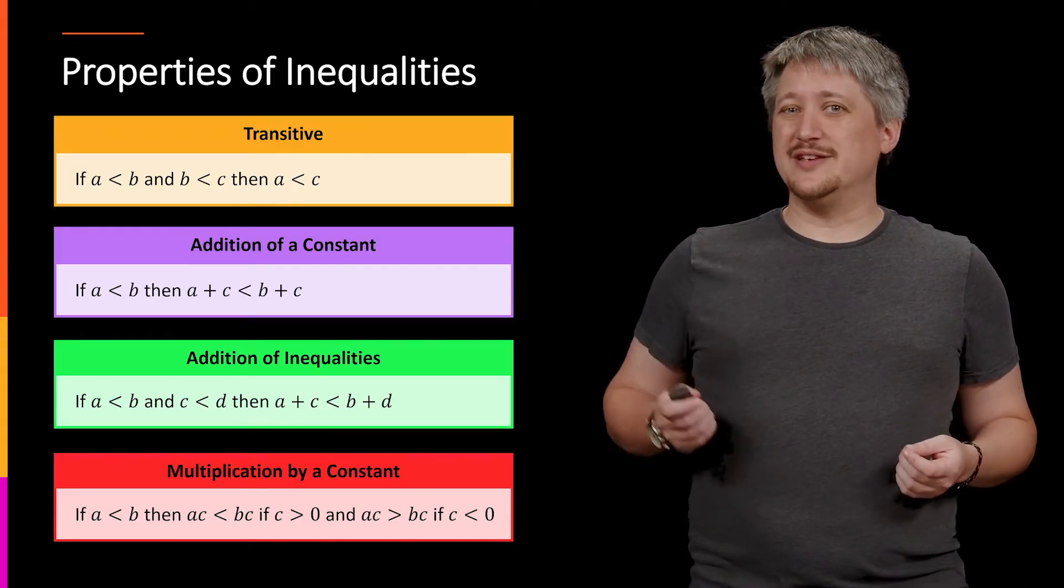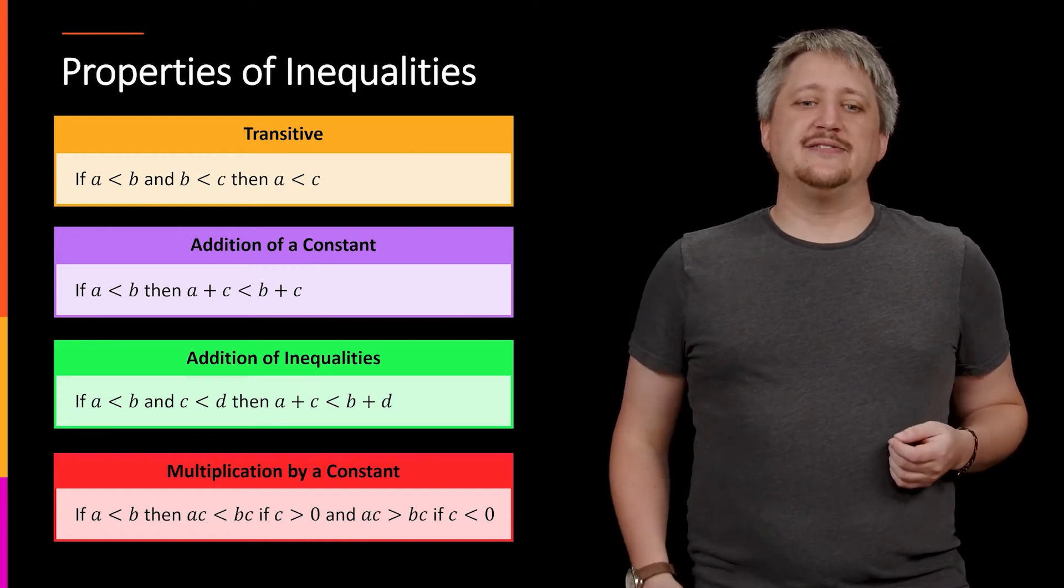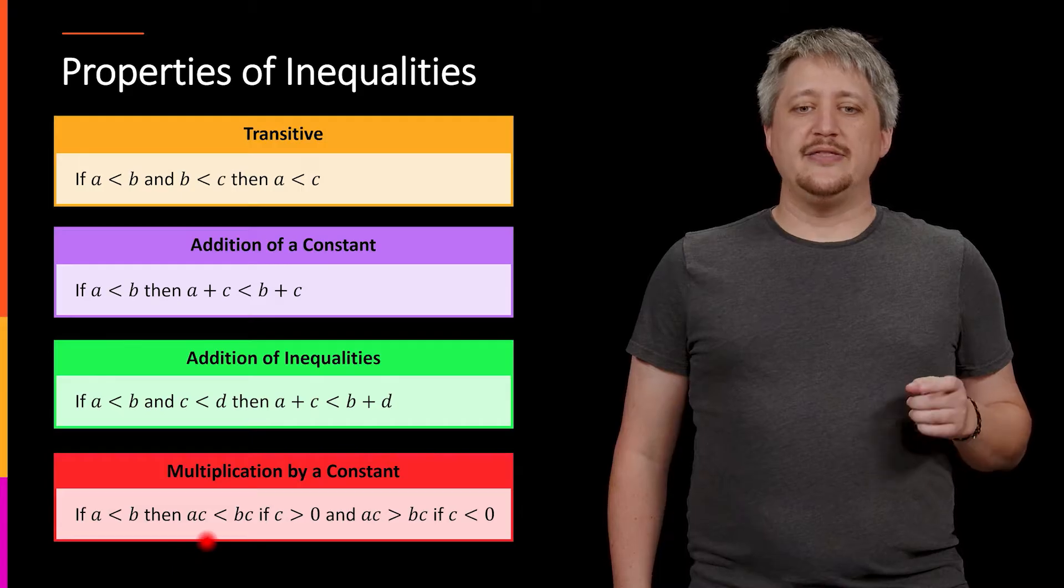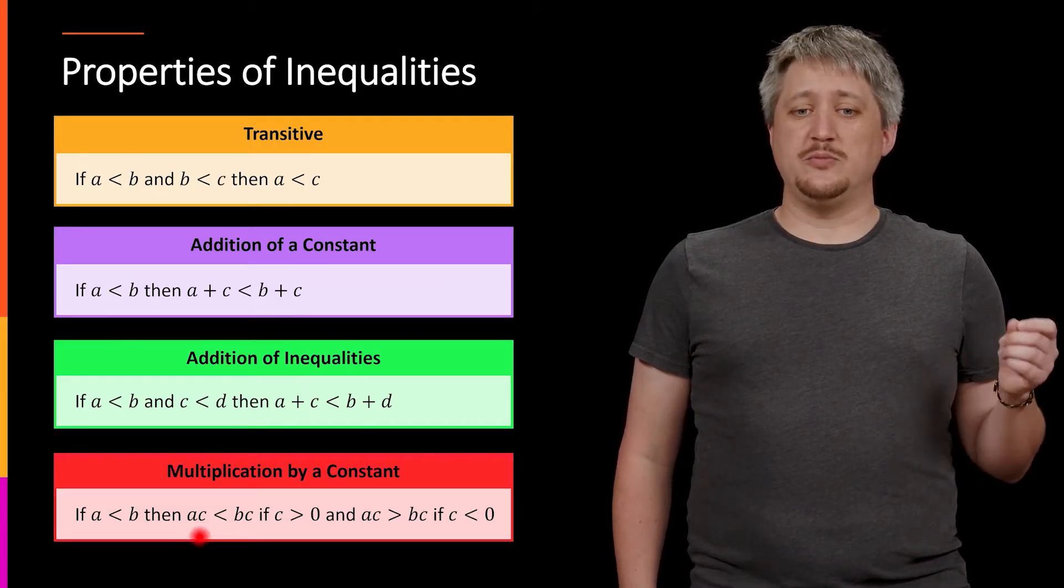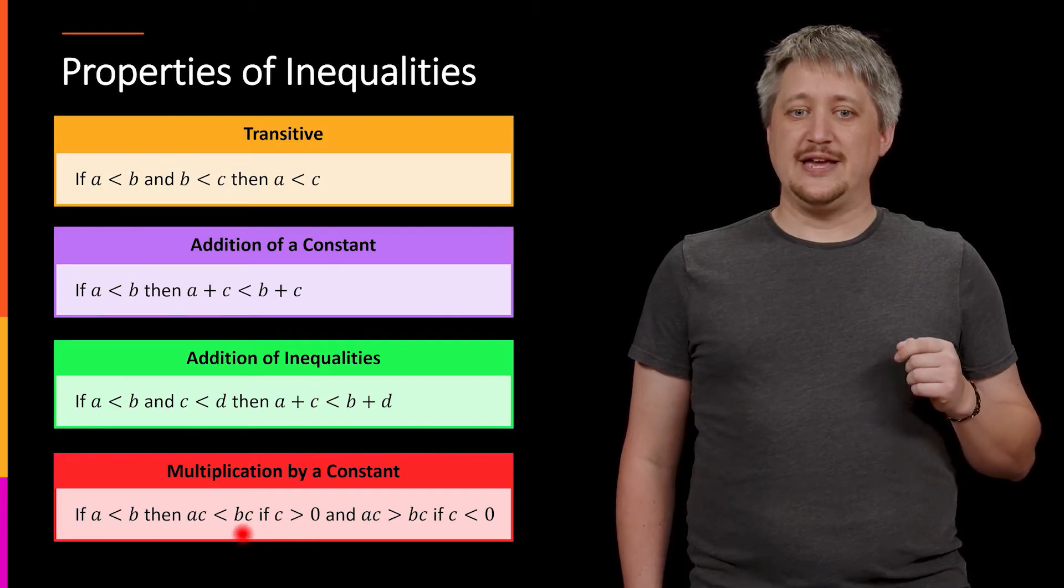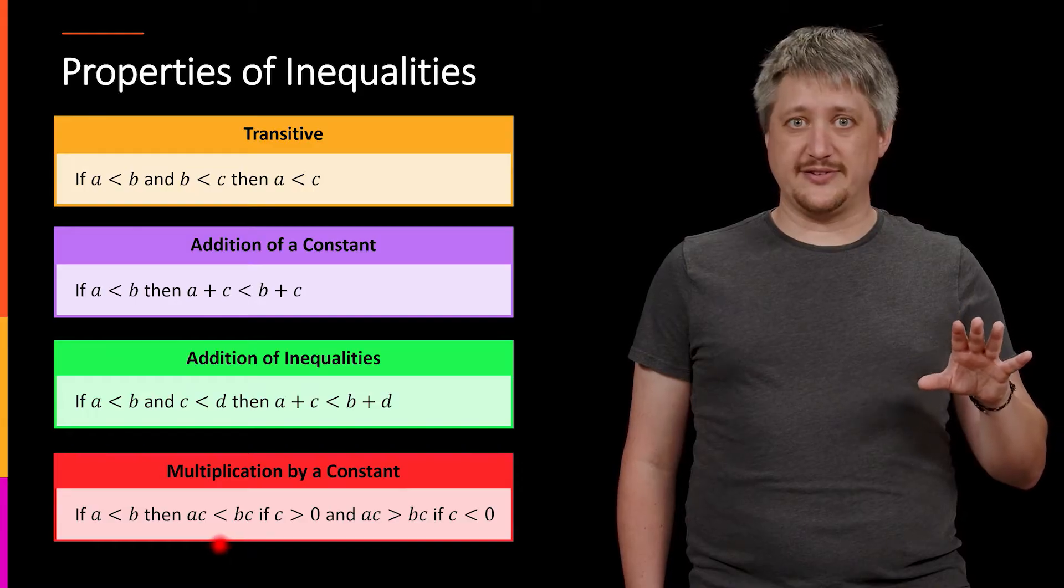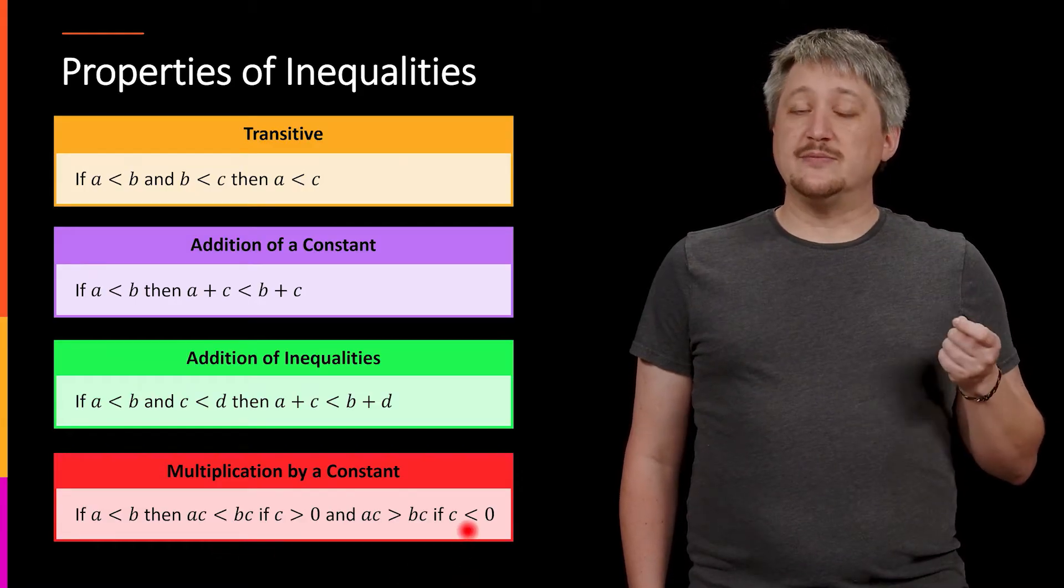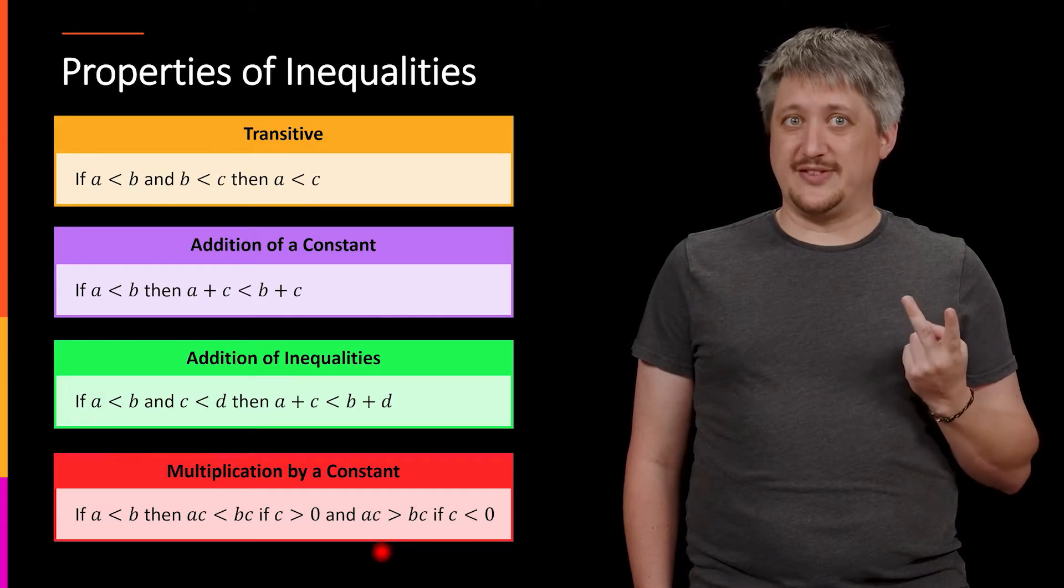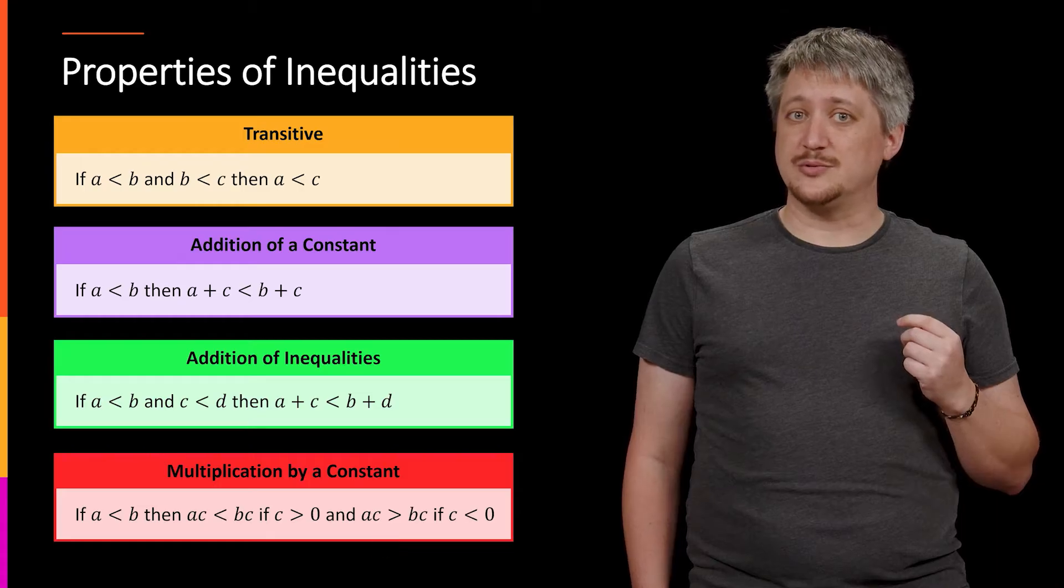Last but not least, multiplication by a constant. This is the one that sometimes throws people. The idea here is that if you have some inequality like a less than b, then that inequality stays the same when you multiply both sides by a number if that number is positive. So if I take something like two and multiply both sides, the inequality stays the same. If I grab something that is negative, then I still know what happens, but it flips the sign. So instead of having a less than sign, it becomes a greater than sign.